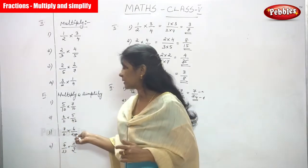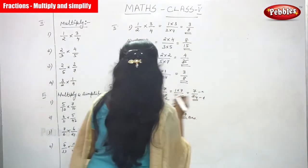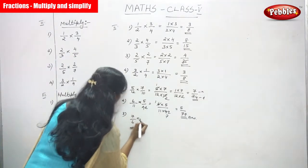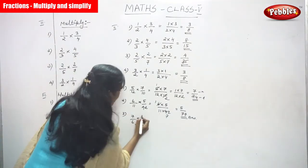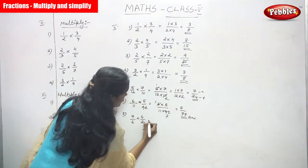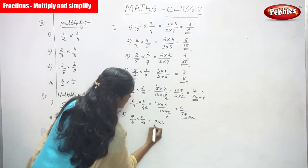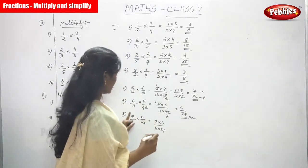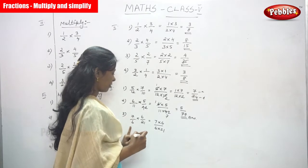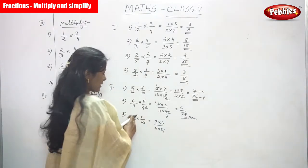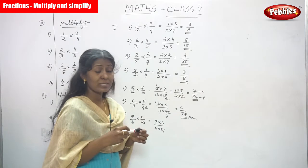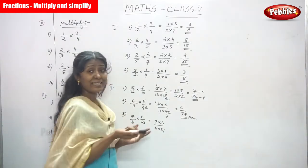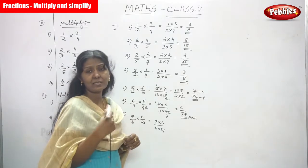Now we are going to solve the third sum: 7/6 multiplied by 6/21. We write it as 7 × 6 divided by 6 × 21. Note that 7/6 is an improper fraction because the numerator 7 is greater than the denominator 6. And 6/21 is a proper fraction.